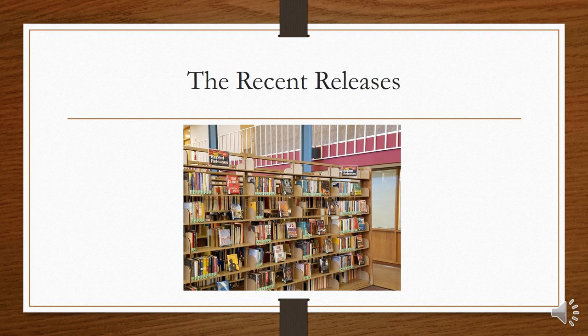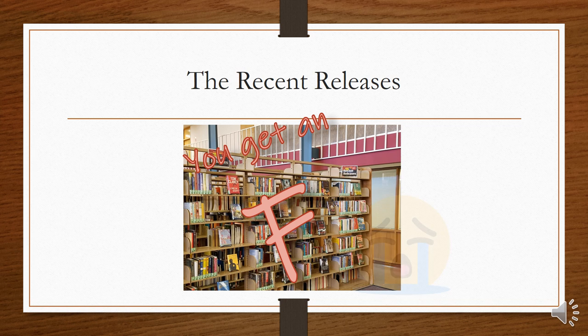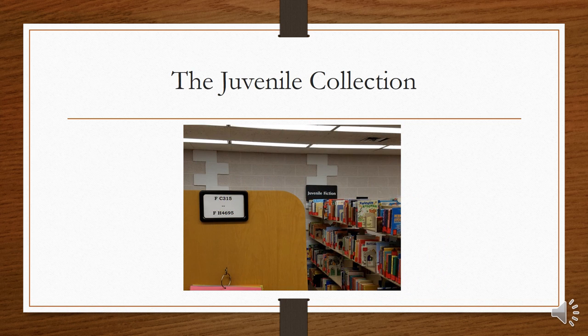We also have a section of recent releases including new books and bestsellers. There's nonfiction in this collection which will have Dewey numbers like usual, but there's also fiction which is marked with an F. Upstairs for the School of Education we have a collection of children's literature including both fiction and nonfiction. Nonfiction has Dewey numbers and fiction has an F again. To distinguish the children's books from the rest of the collection, all of these books are marked with the letters LS after their call numbers.